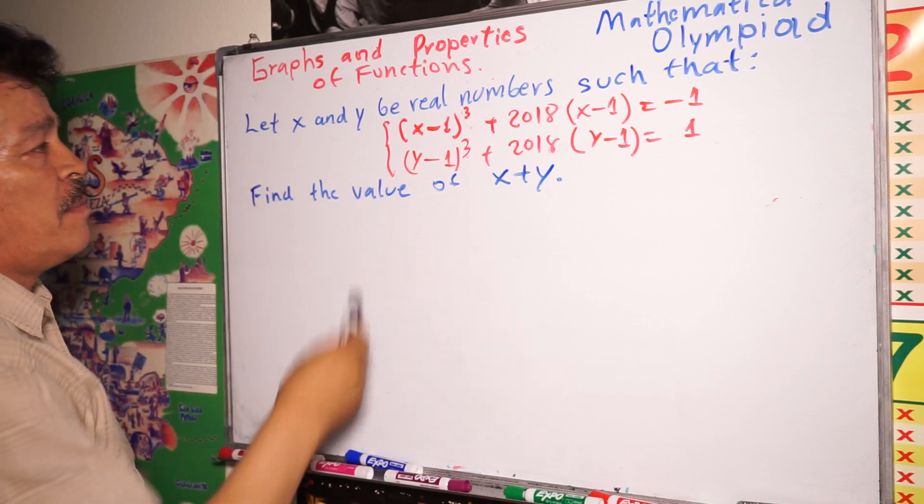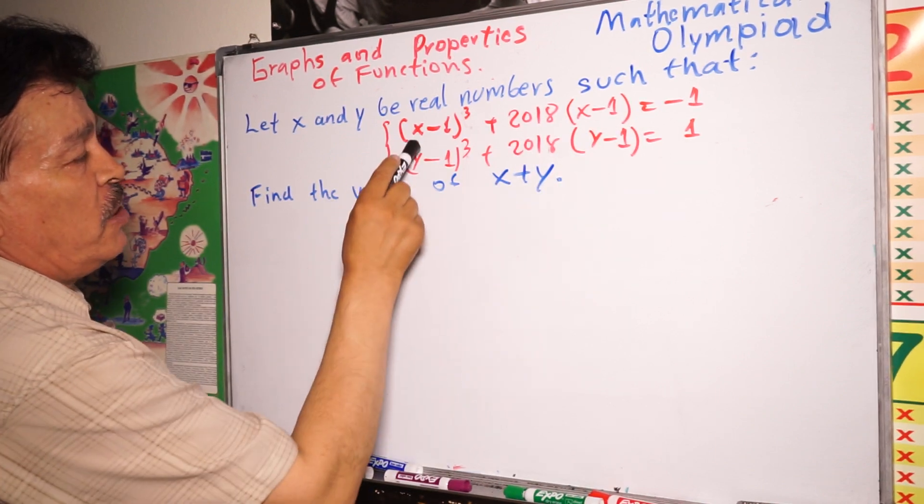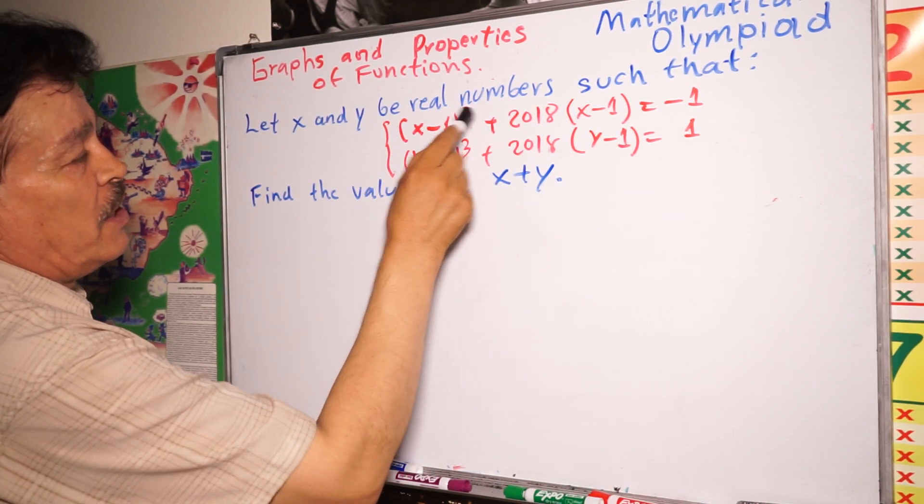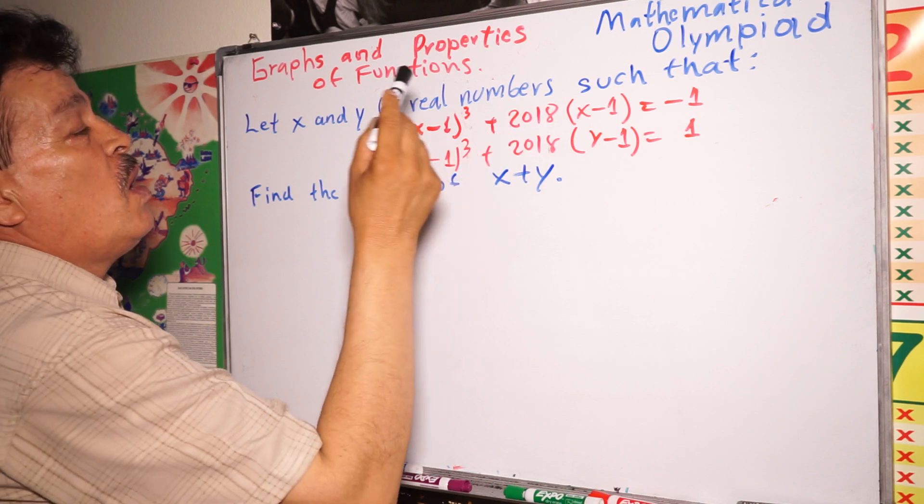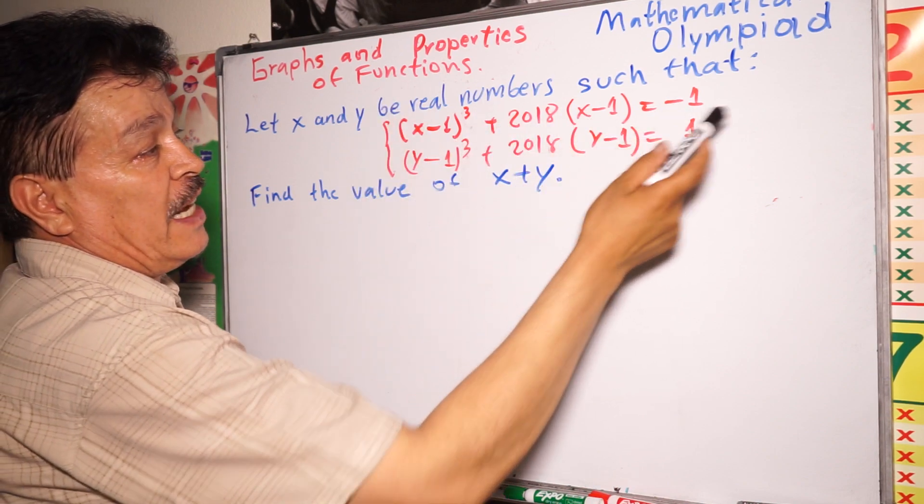Let x and y be real numbers such that (x-1)³ + 2018(x-1) = -1.